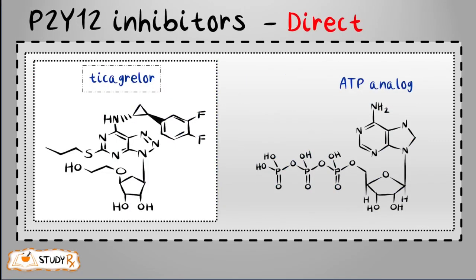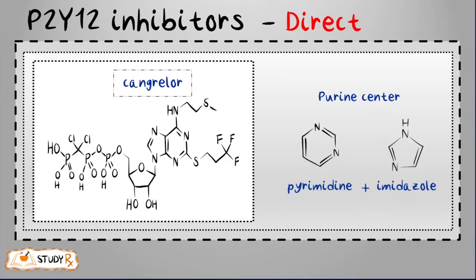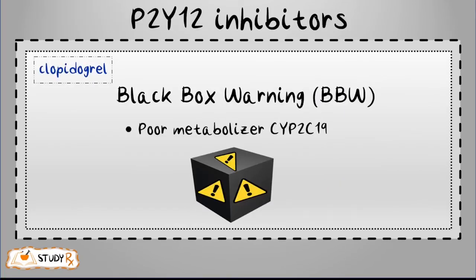Ticagrelor is an analog of ATP (adenosine triphosphate), the nucleotide known in biochemistry as the molecular currency of intracellular energy transfer — meaning ATP stores and transports chemical energy within cells. Cangrelor has a purine center; a purine is a heterocyclic aromatic organic compound consisting of a pyrimidine ring fused to an imidazole ring. Purines are water-soluble. Cangrelor also has a terminal phosphate group of a triphosphate.